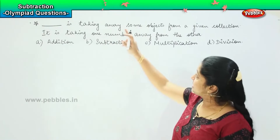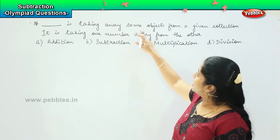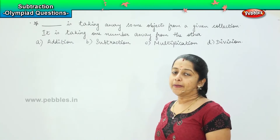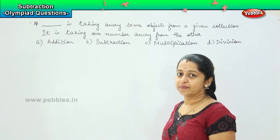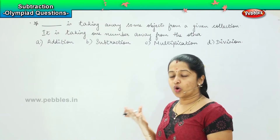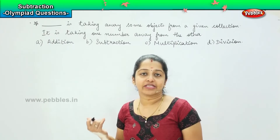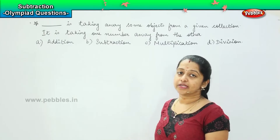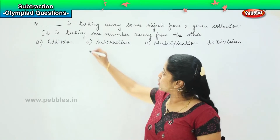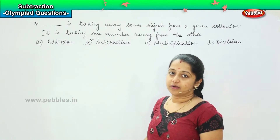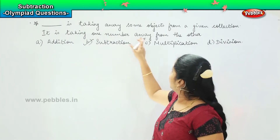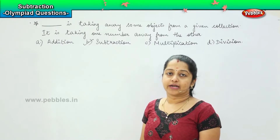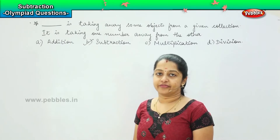The question asks us: dash is taking away some objects from a given collection. So if you remember, the definition of subtraction is that a quantity is given and we take away something from it. So the answer is option B: subtraction, because it is taking one number away from the other. And the balance we get is called the difference.